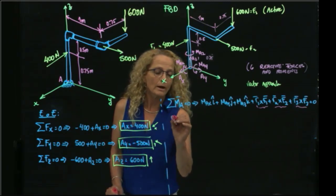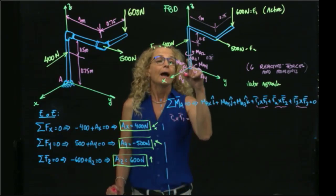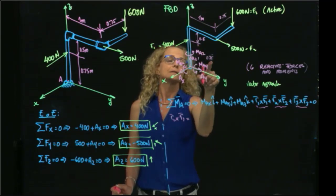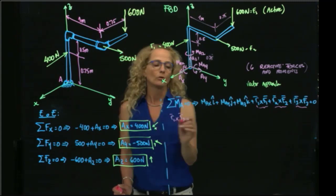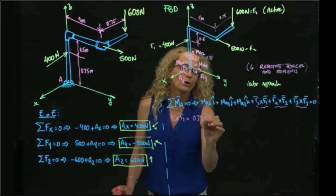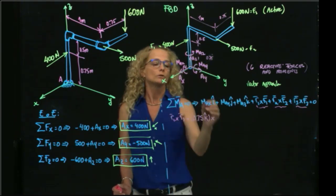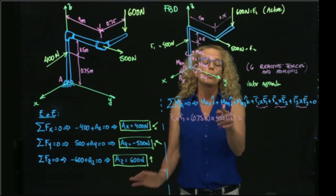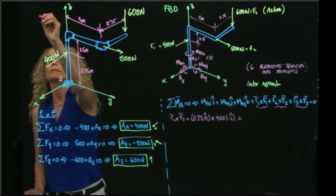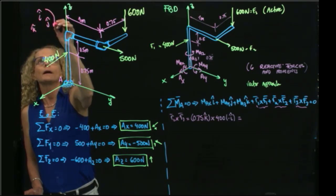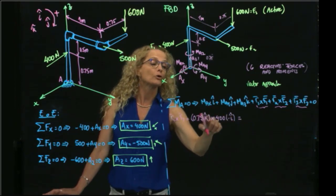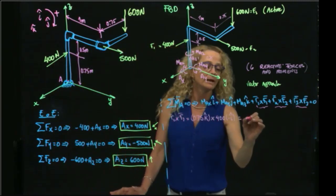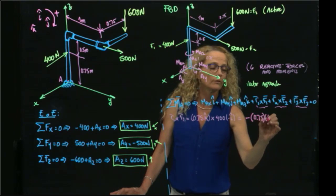Let me calculate R1 cross F1. R1 is only in one direction — the Z direction — and it is 0.75K. So it will be 0.75K cross F1, which is negative 400I. Since K cross I gives positive J, with the negative value this gives negative 0.75 times 400 in the J direction.